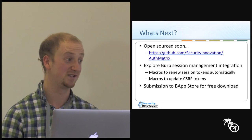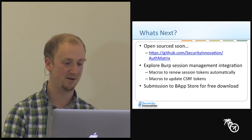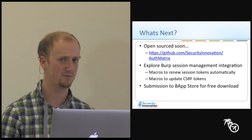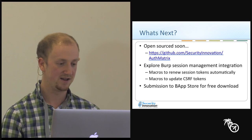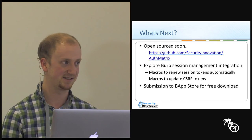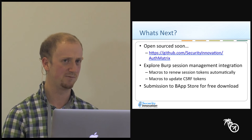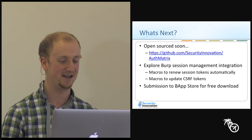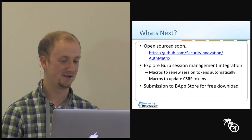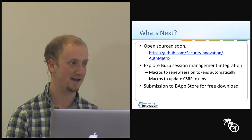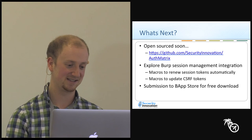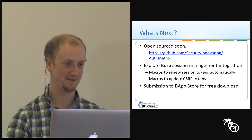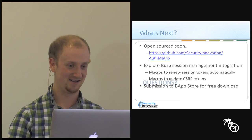What's next? It's going to be open source and free, available on the Security Innovation GitHub page in the next week. For the next edition of AuthMatrix, Burp has a not-well-known feature where it can use macros and custom directives to automatically renew session tokens and CSRF tokens, and it does provide an API for that functionality — something I'm exploring. Also, my slides are slightly out of date: I said I was going to submit to the Burp App Store for free download, but I found out today it was approved and is currently on the Burp App Store for free download right now. Check it out.